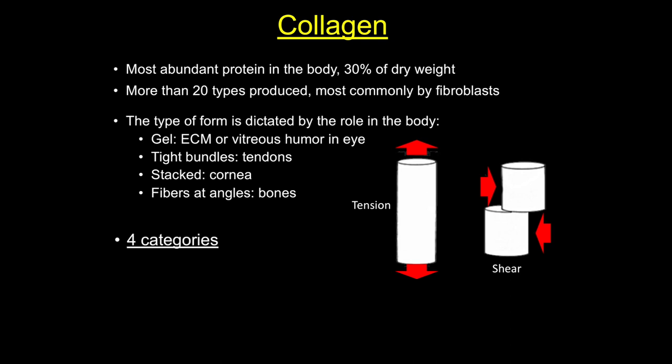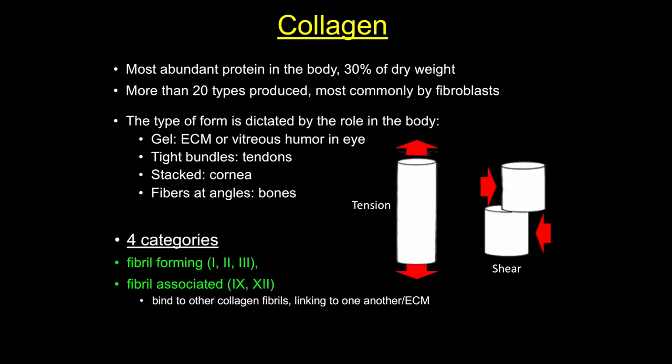There are four categories of collagens: fibrillary, fibril-associated, and two found in basal lamina — network-forming and anchoring. Fibrillar collagens, types 1, 2, and 3, have subunits that aggregate into large, flexible fibrils visible even under the light microscope, with a tensile strength that exceeds that of stainless steel of the same diameter. The second category, fibril-associated collagens, are thought of as stabilizing collagens because they form molecular bridges between fibril-forming collagens and ground substance.